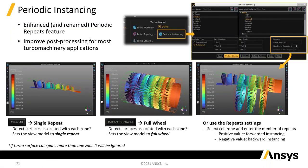With the turbo workflow, there's also a big improvement in the way you can set up periodic instancing. Within that, if you're building a machine, you might want a couple of blades in one row, a whole row somewhere else, and five in another. You can very quickly set this up, and it makes post-processing easy because you can tell it you want to post-process the whole device and it will copy accordingly.